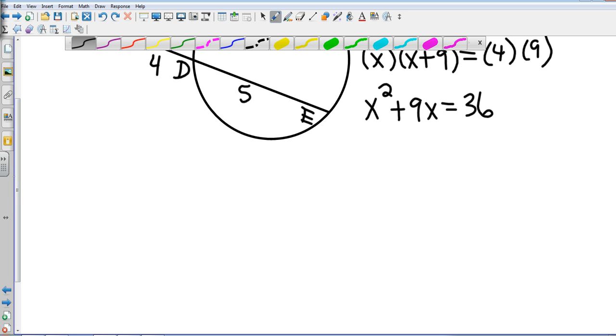So I'm going to subtract that 36 because I'm going to have to solve this trinomial. And so let's factor it up. I need products that multiply to get negative 36 and add to get positive 9. And so I'm going to go with positive 12 minus 3.